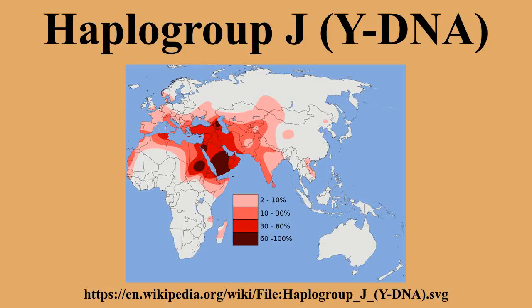Prior to 2002, there were at least seven naming systems for the Y-chromosome phylogenetic tree in academic literature, leading to considerable confusion. In 2002, the major research groups came together to form the Y-Chromosome Consortium and published a joint paper creating a single unified tree. Later, a group of citizen scientists interested in population genetics and genetic genealogy formed a working group to create an amateur tree aiming to be timely. The table below brings together all of these works at the point of the landmark 2002 YCC tree, allowing researchers to quickly move between nomenclatures.